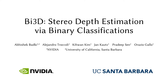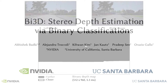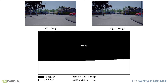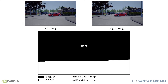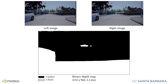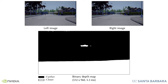We present By3D, a depth estimation approach that allows trading depth accuracy and latency at inference time. Given a stereo image, our method can detect objects that are closer than a given distance in just a few milliseconds. This one-bit depth works as a programmable geofence in front of the camera.